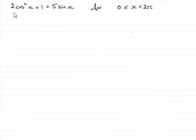Hi. Now, in this question, we're asked to solve 2cos²x + 1 = 5sinx for x greater than or equal to 0 but less than 2π, and x is measured in radians.